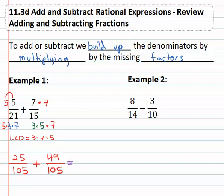We're ready to add those together. Twenty five plus forty nine is seventy four, over the common denominator of one oh five.